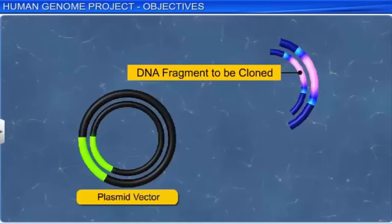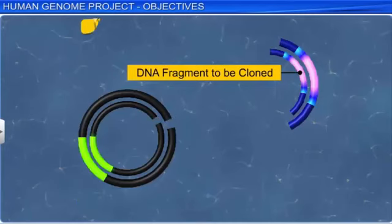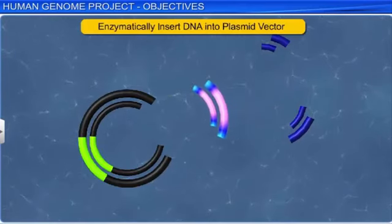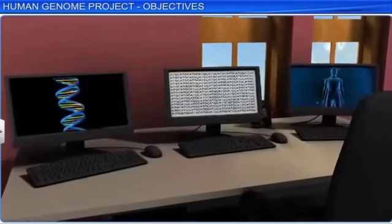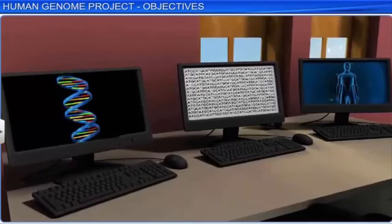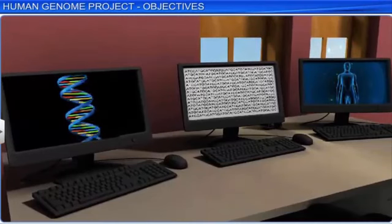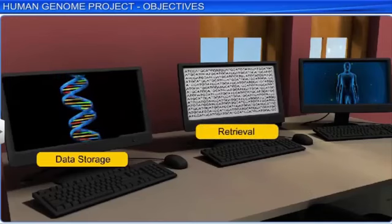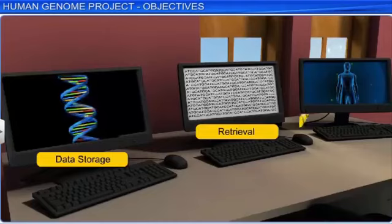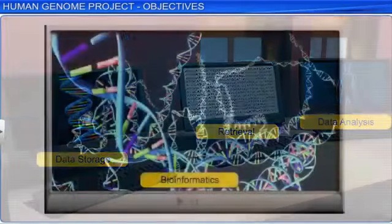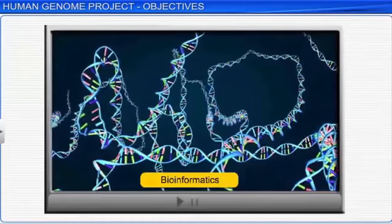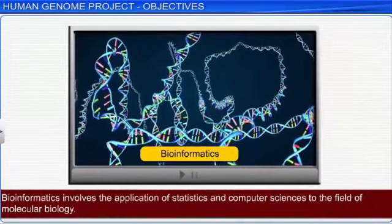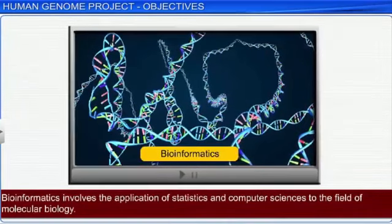With the advent of advanced genetic engineering methods, it was now possible to isolate and clone a piece of DNA to determine its sequence. So even though the HGP was a mammoth project, it was a viable one. Since the HGP aimed to store the entire genome information in databases, it required high-speed computational devices for data storage and retrieval, as well as improved tools for data analysis. Thus, the HGP is also credited with contributing to the rapid development of a new branch of biology called bioinformatics, which involves the application of statistics and computer sciences to the field of molecular biology.